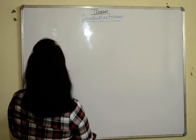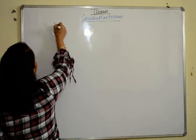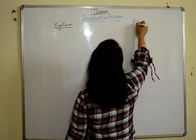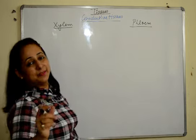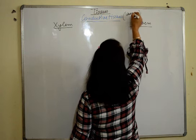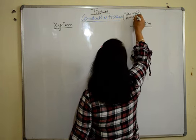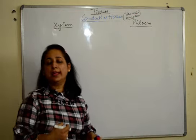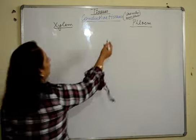Conductive tissues — by now we clearly know that there are two conductive tissues, xylem and phloem. You must know that these conductive tissues, xylem and phloem, when present together in bundles, is known as a vascular bundle. Xylem and phloem together form a bundle-like structure in the plants known as vascular bundle.